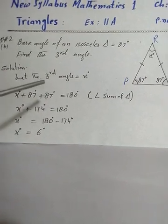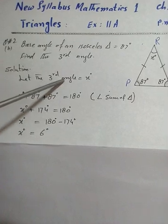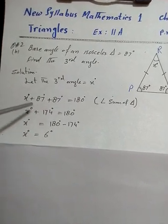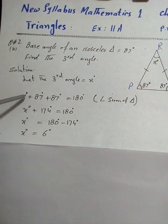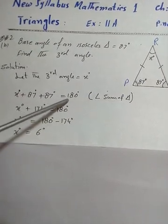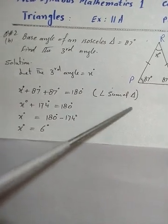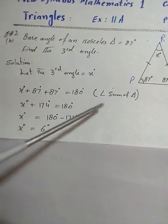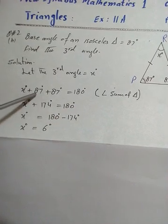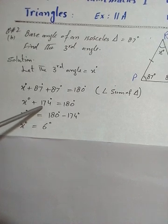Now we start the solution. Let the third angle be equal to x degrees. Whenever we add the three angles of the triangle: x degrees plus 87 plus 87 equals 180 degrees, because the angle sum of a triangle is always 180 degrees. The sum of 87 and 87 is 174.